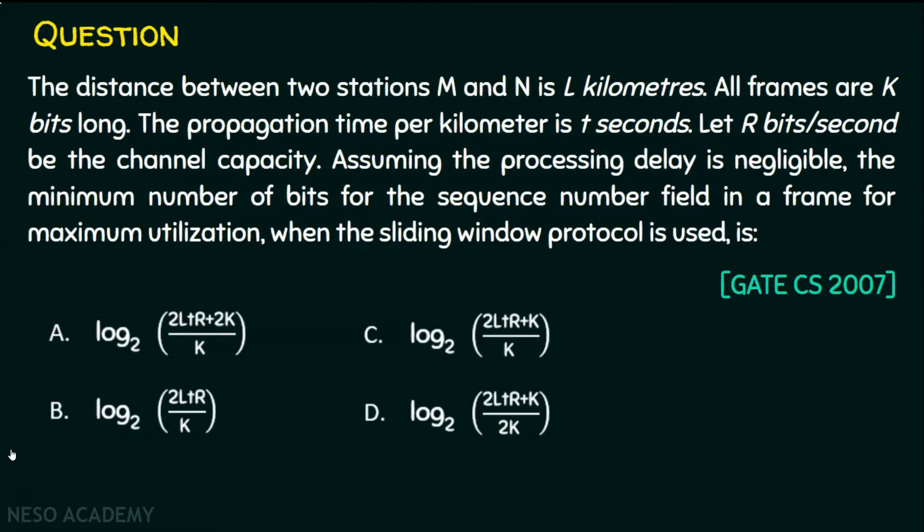Options are given and we are required to find the minimum number of bits for the sequence number field in a frame when sliding window protocol is used. And this is the GATE Computer Science question which was asked in 2007.